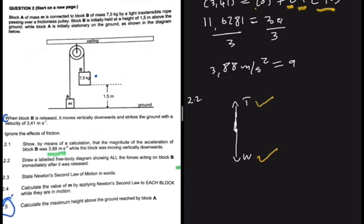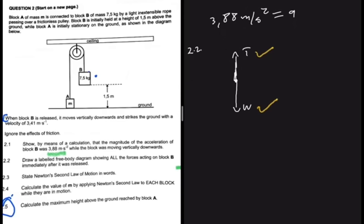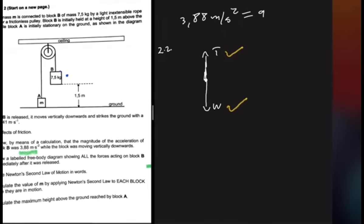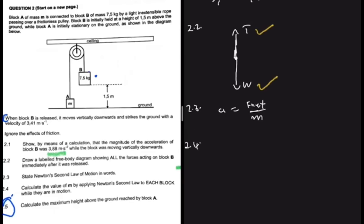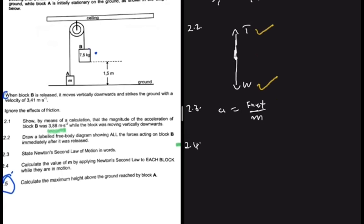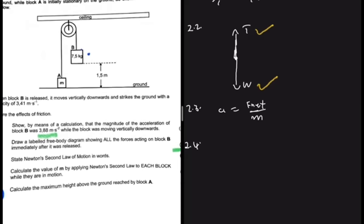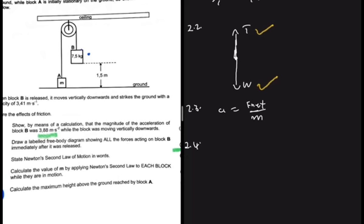Question 2.3 asks you to state Newton's second law of motion in words — we'll leave that for you. For 2.4, a very interesting question: calculate the value of m by applying Newton's second law to each block while in motion. Students often get this wrong by not applying Newton's second law to both blocks.